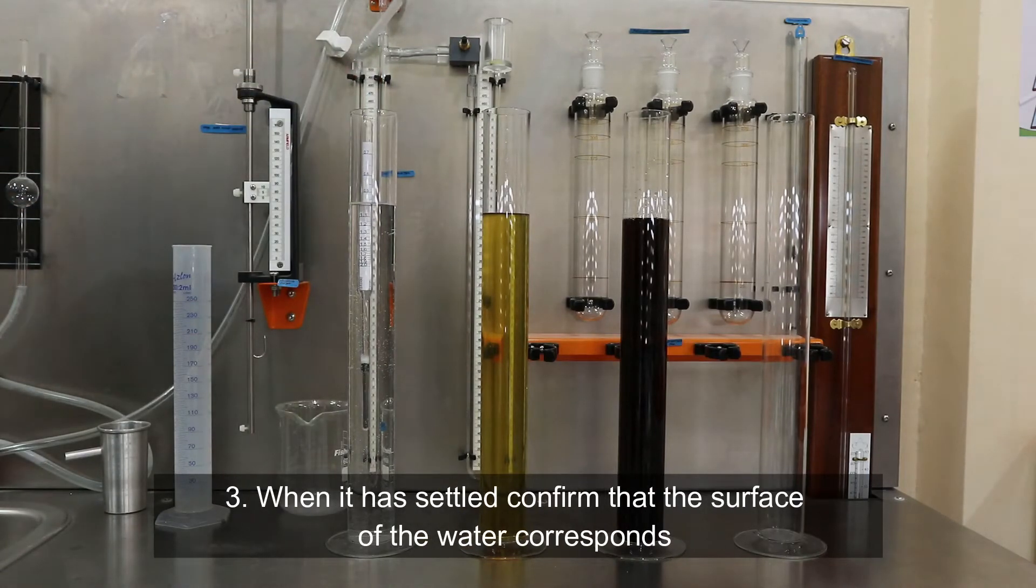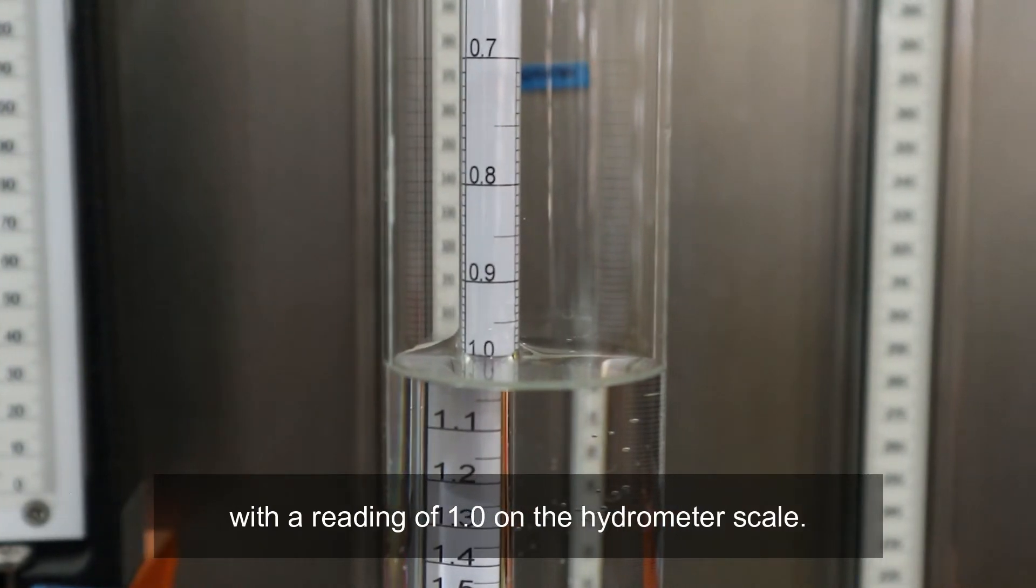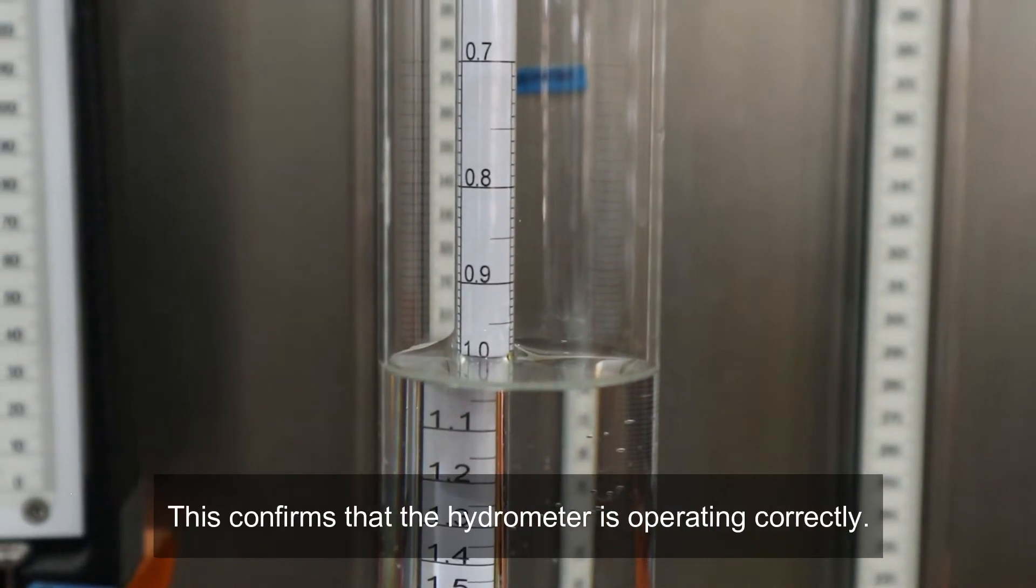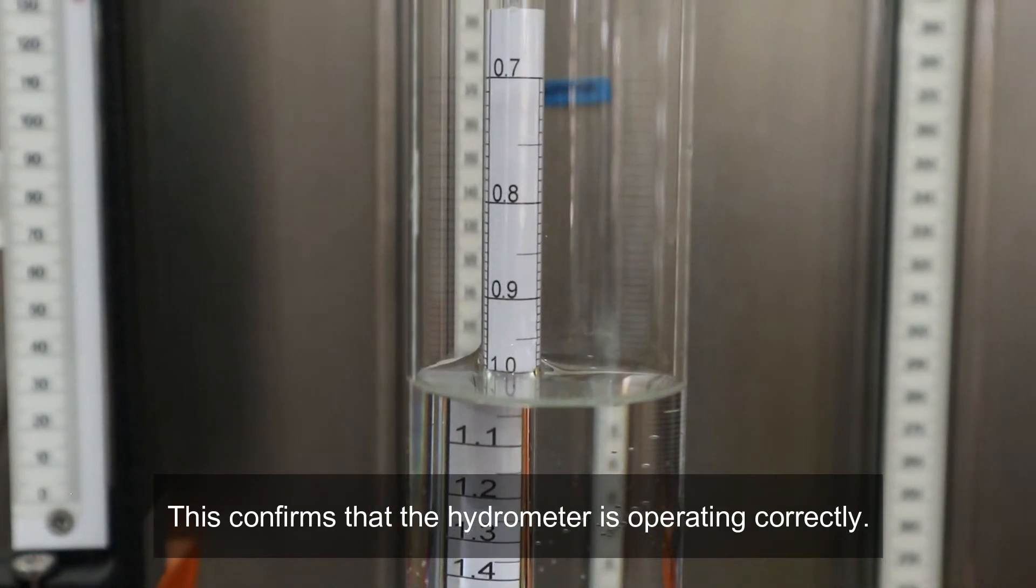Third, when it has settled, confirm that the surface of the water corresponds with a reading of 1.0 on the hydrometer scale. This confirms that the hydrometer is operating correctly.